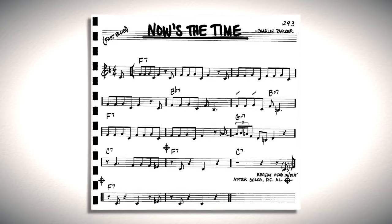For the example in this video I'm going to be using a 12-bar concert F blues. The melody I'm going to be using is Charlie Parker's 'Now's the Time.' Here's what it sounds like when you play it as a medium swing — pretty standard.